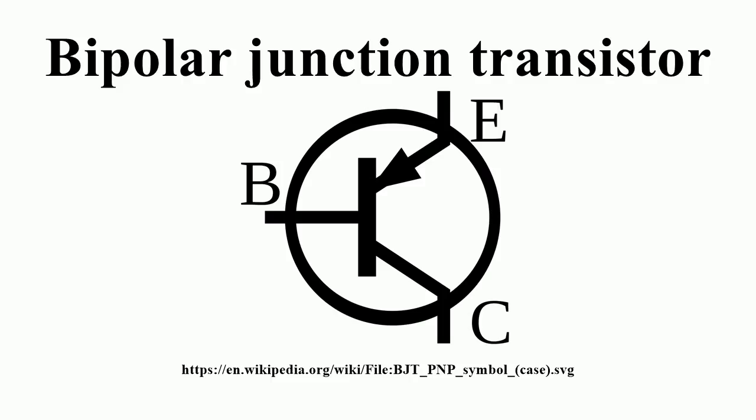A discrete transistor has three leads for connection to these regions. Typically, the emitter region is heavily doped compared to the other two layers, whereas the majority charge carrier concentrations in base and collector layers are about the same. By design, most of the BJT collector current is due to the flow of charges injected from a high-concentration emitter into the base where there are minority carriers that diffuse toward the collector, and so BJTs are classified as minority carrier devices.